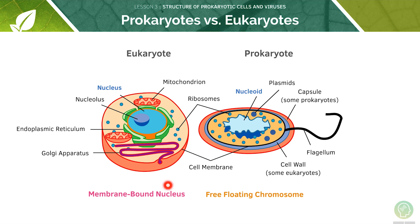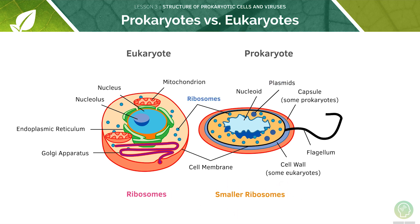Eukaryotes will have a membrane-bound nucleus. In contrast to this, prokaryotes have no nucleus but have a free-floating chromosome instead. Eukaryotes do not have a plasmid whilst prokaryotes do. Both have ribosomes but the ones in prokaryotes are always smaller.